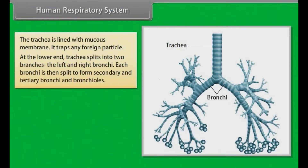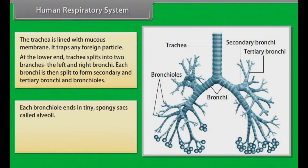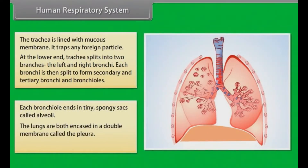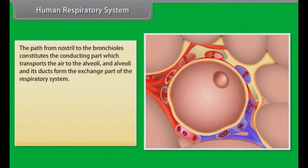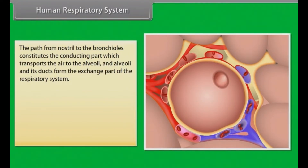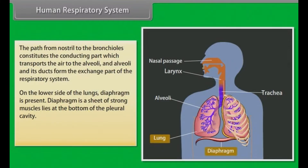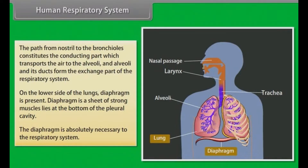Each bronchus is then split to form secondary and tertiary bronchi and bronchioles. Each bronchiole ends in tiny spongy sacs called alveoli. The lungs are both encased in a double membrane called the pleura, which protects and cushions the lungs. The path from the nostril to the bronchioles constitutes the conducting part, which transports air to the alveoli. Alveoli and their ducts form the exchange part of the respiratory system. On the lower side of the lungs, the diaphragm is present — a sheet of strong muscles at the bottom of the pleural cavity that is absolutely necessary to the respiratory system.